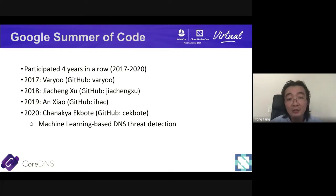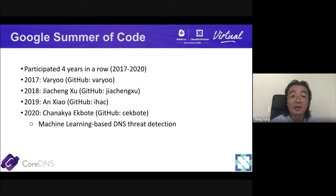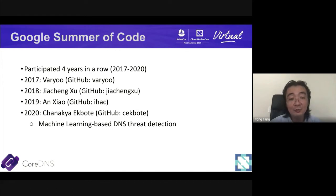CoreDNS also participates in Google Summer of Code. For the past four years, many students have contributed — things like DNS tap and ACL (access control layer) plugins, which are part of the default plugin set. This year, Chanaka, a student from India, contributed a project called machine learning-based DNS detection. This is an interesting external plugin that does very exciting things, though it's not part of the main CoreDNS repo.